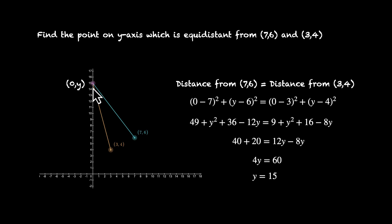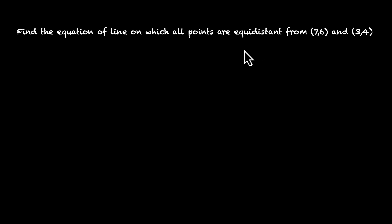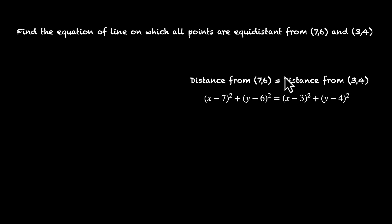This point (0, 15) sits on the y-axis and is equidistant from both (7, 6) and (3, 4). Now here's an interesting question: find the equation of the line on which all points are equidistant from (7, 6) and (3, 4). We found the point on the x-axis, then the point on the y-axis — now we need the equation of a line on which all such points lie. Pause and think about it. We assume the points are (x, y) and use the distance formula: √((x−7)² + (y−6)²) = √((x−3)² + (y−4)²). Getting rid of the square root, we get this equation.